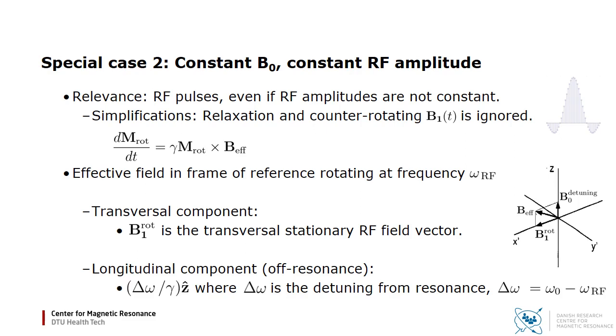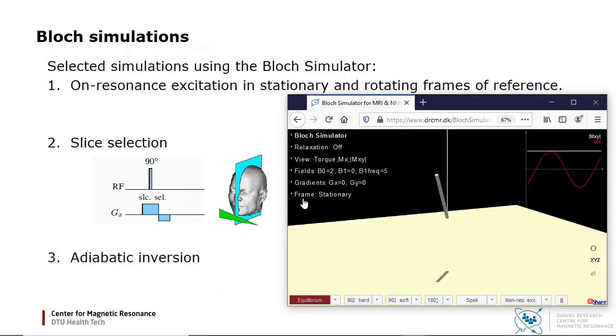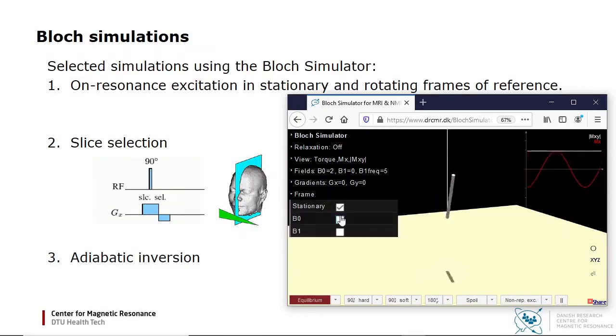These concepts will now be explored in the Bloch simulator. Here you see precession once again. Let's change to a frame of reference rotating at the Larmor frequency. You still see the precession, but from a different point of view. This is reflected in the rotation of the floor. In this rotating frame of reference, the magnetization is now stationary, so the B0 field appears to be transformed away.